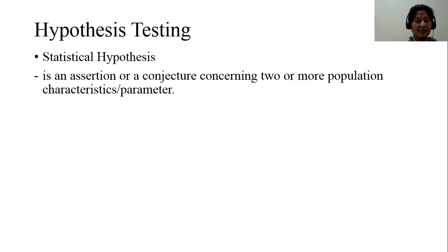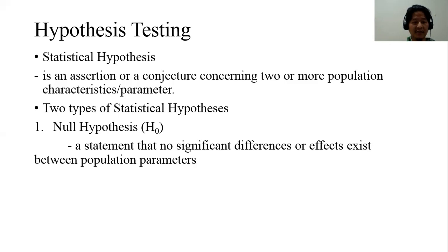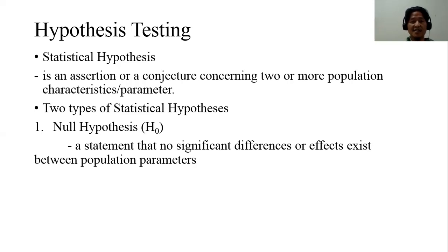There are two types of statistical hypothesis. First is the null hypothesis — a statement that no significant differences or effects exist between population parameters. When we state our null hypothesis, we always say that there is no significant difference or no significant effect on a certain population parameter.